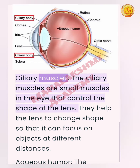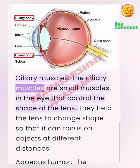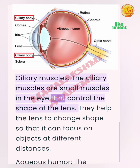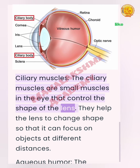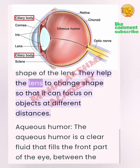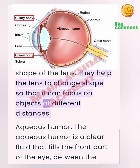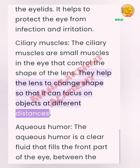Ciliary muscles: The ciliary muscles are small muscles in the eye that control the shape of the lens. They help the lens to change shape so that it can focus on objects at different distances.